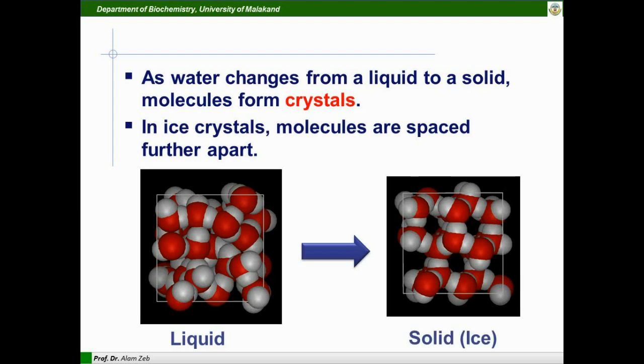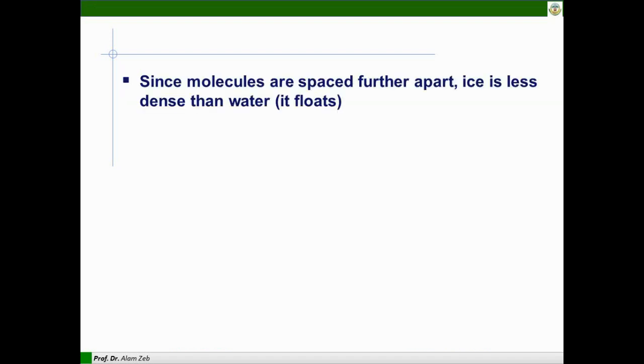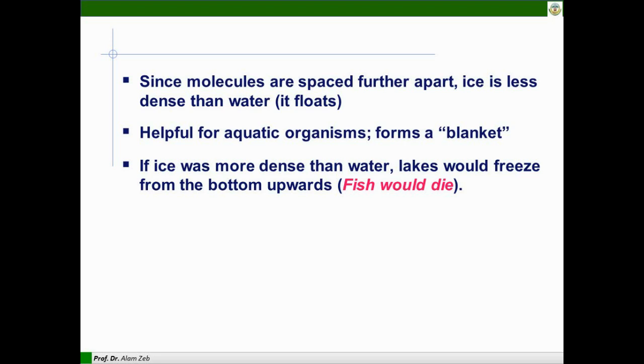As water changes from a liquid to a solid, this forms crystals. In ice crystals the molecules are spaced further apart. When the liquids become ice they are in a more ordered form and that's why its volume is increased. Since molecules are spaced further apart, ice is less dense than water and it floats. This phenomenon is helpful for aquatic organisms which form a blanket. If ice was more dense than water, lakes would freeze from the bottom upward and the fish would die.